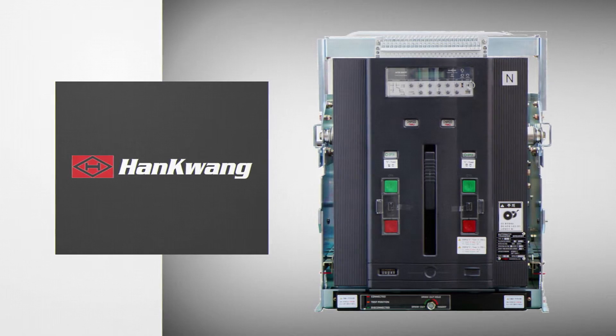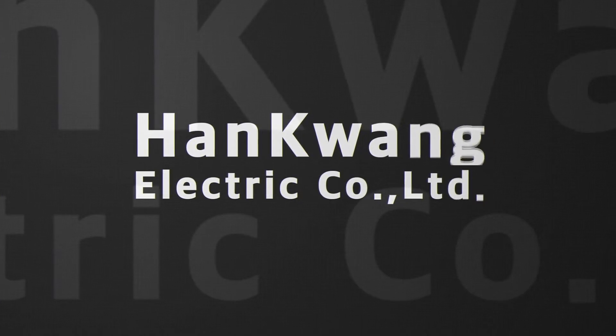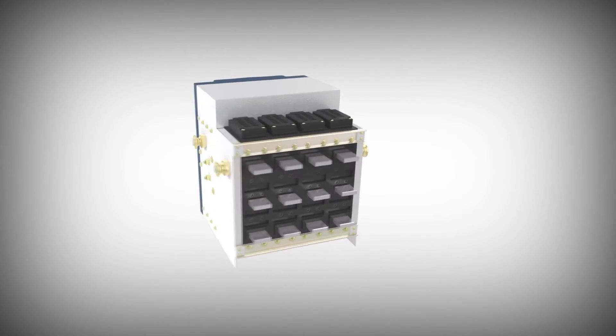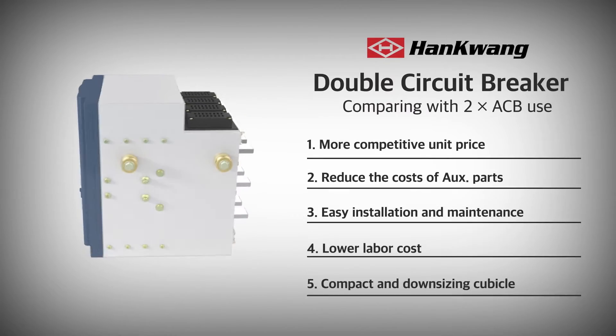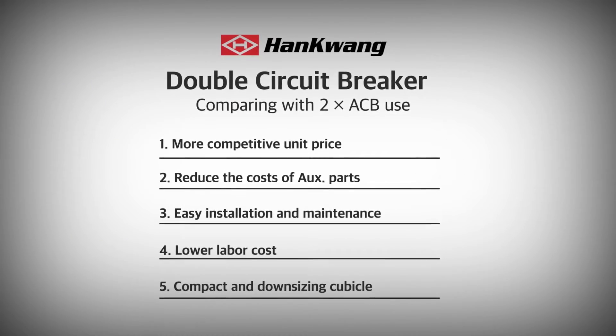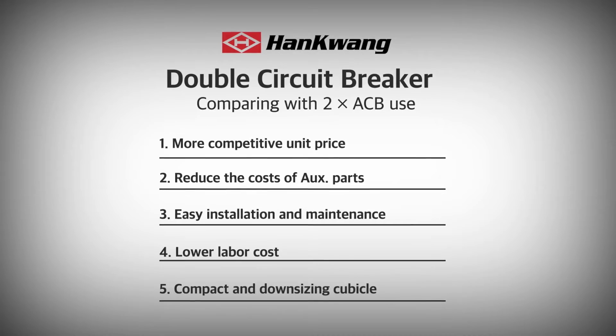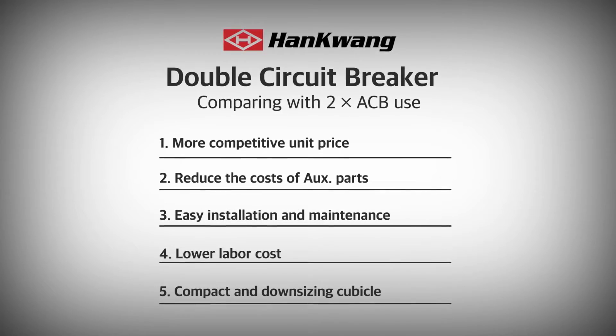Likewise, DCB is the product that can execute all five functions with only one product. Compared to the conventional method of using two ACBs and ATS it reduces cost, work hours, labor, mechanical parts and cubicle size.